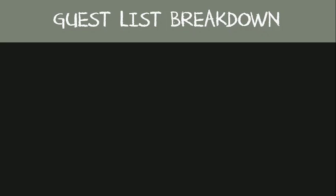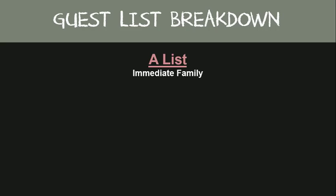Each couple will make three categories for invites. Your A-list, which is your immediate family — siblings, step-siblings, parents, step-parents, grandparents, aunts, uncles, cousins — and your very best friends, or those whom you speak with at least once a week.